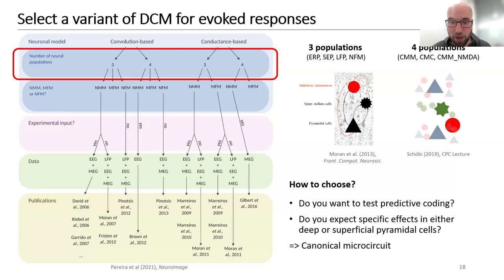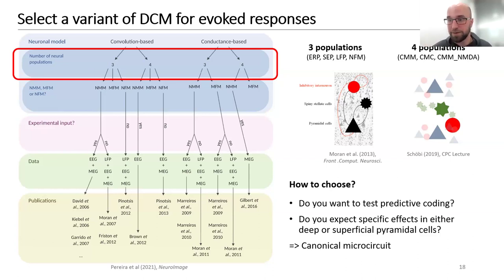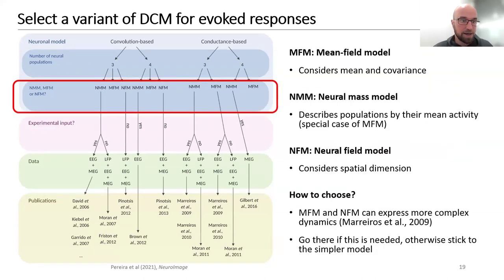When do you pick which model? If you want to test predictive coding, or if you expect specific effects in deep or superficial pyramidal cells due to an intervention, go with the four-population canonical microcircuit model. Otherwise, you can use the classical Jansen-Rit three-population model. There are also mean field models that consider both the mean and covariance of a neural population, and neural mass models which are a simpler special case considering only the mean activity.